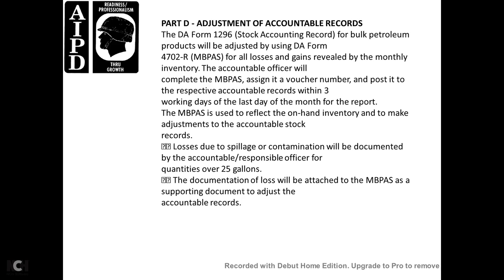Adjustment of the accountable record — DA form 1296 — for the tracking account of the petroleum property, adjusted to DA form 4702, over the monthly bulk petroleum accounting summary. The loss or gain revealed with the monthly inventory requires the accounting officer to complete the monthly bulk petroleum accounting summary voucher number, posted to the accountable record by the end of the third workday of the last day of the month. Spillage and contamination documentation accounts for residual quantity over 25 gallons, allowing adjustment of the accounting records with the monthly bulk petroleum accounting summary as a supporting document.